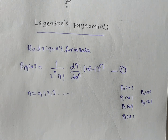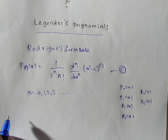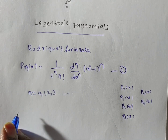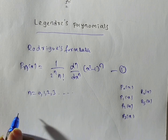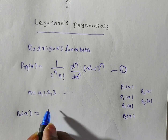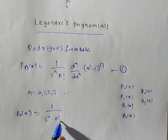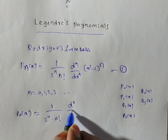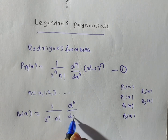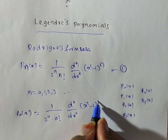Now, how will you get P0? To get P0, put n equal to 0 in equation number 1, that is, substitute into the Rodrigues' formula. If you put n equal to 0, then P0 of x is equal to 1 by 2 power 0, into 0 factorial, into d power 0 by dx power 0, times of x squared minus 1, whole to the power of 0.